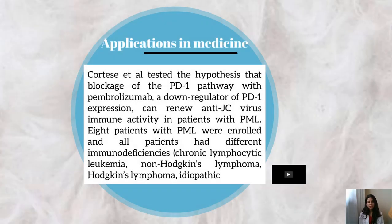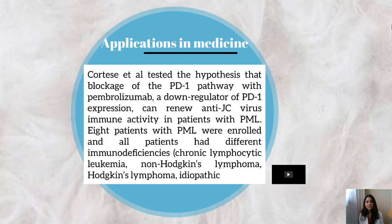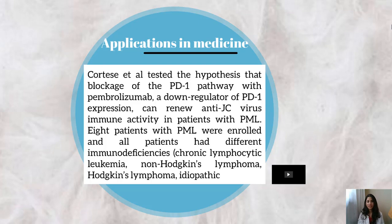Cortese et al. tested the hypothesis that blockage of the PD-1 pathway with pembrolizumab, a downregulator of PD-1 expression, can renew anti-JC virus immune activity in patients with PML. Eight patients with PML were enrolled and all patients had different immunodeficiencies, including chronic lymphatic leukemia, non-Hodgkin's lymphoma, lymphoma, and idiopathic causes.